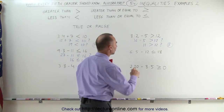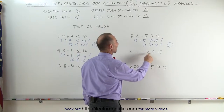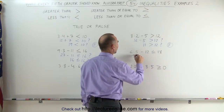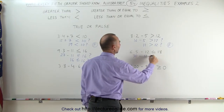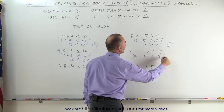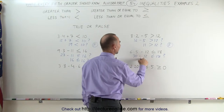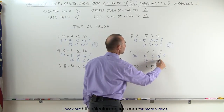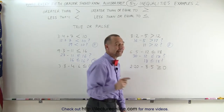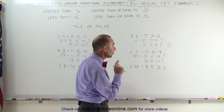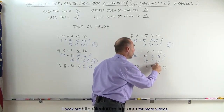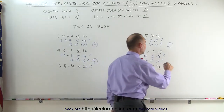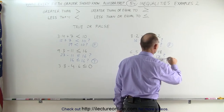Coming over here, 6 times 5 minus 12 — is that less than or equal to 18? 6 times 5 is 30, minus 12 — is that less than or equal to 18? 30 minus 12 is 18. Is 18 less than or equal to 18? We know that 18 is not less than 18, but we do know that 18 is equal to 18. If one of the two conditions is true, then that expression is a true statement. So we can say true.